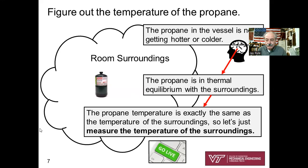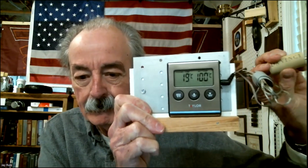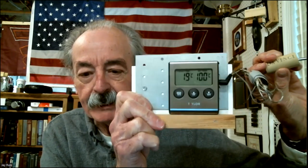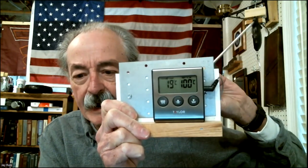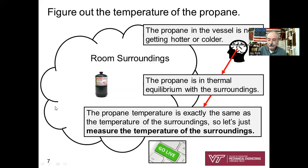Our conclusion: the propane temperature is exactly the same as the temperature of the surroundings. So let's measure the surroundings. Going live — here's my thermal probe. I'm measuring the temperature of the surroundings, and you can see it's 19 degrees C. So we conclude: the temperature inside our closed system of propane is 19 degrees C.